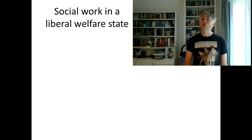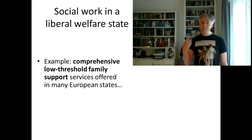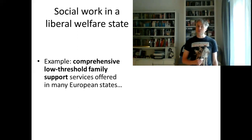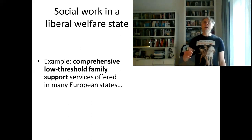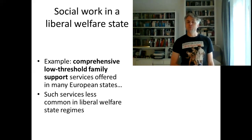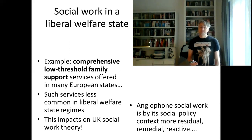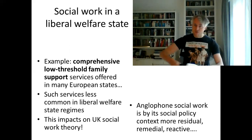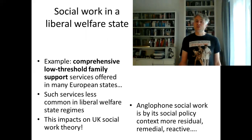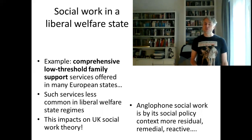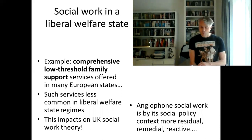Social work in the UK was always quite different from social work on the continent. Esping-Andersen describes the UK as having a liberal welfare state. In Germany, like many European states, we have quite comprehensive, low-threshold family support services — preventative help for child-raising issues — which is much less common in liberal welfare states like the UK or America. Anglophone social work is, by its social policy context, more residual — at the edges, not mainstream. It's remedial, fixing things which are problematic or broken. It's reactive, not preventative, not proactive, not generally low-threshold. Hold on to that because that context shapes this theory.